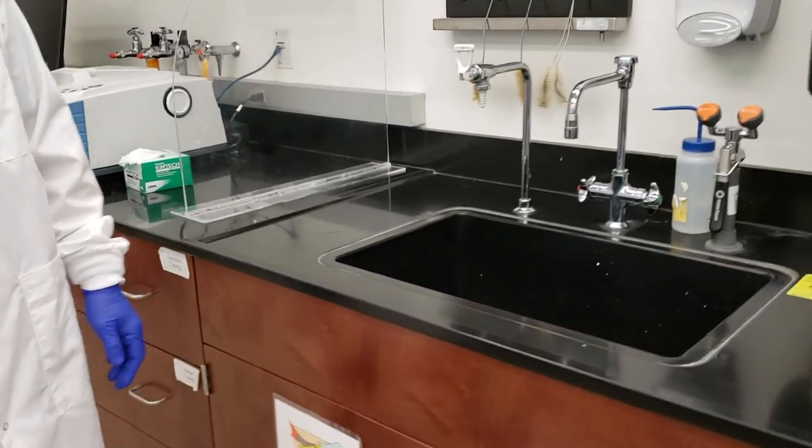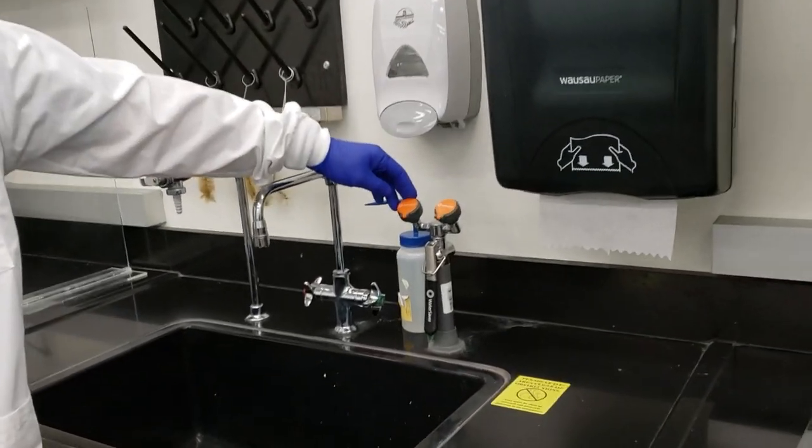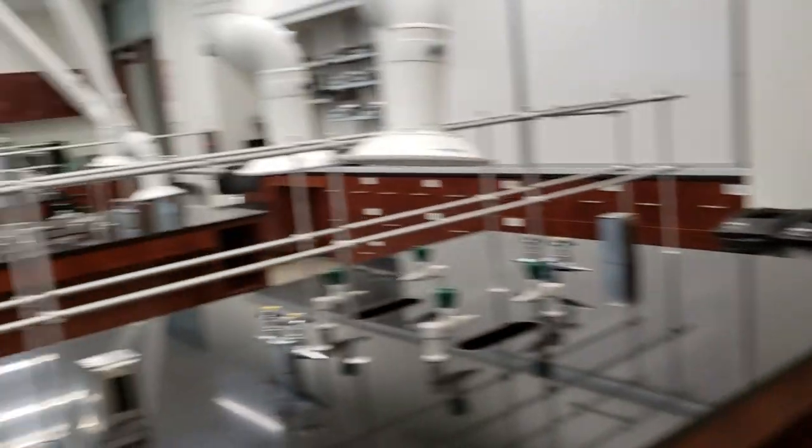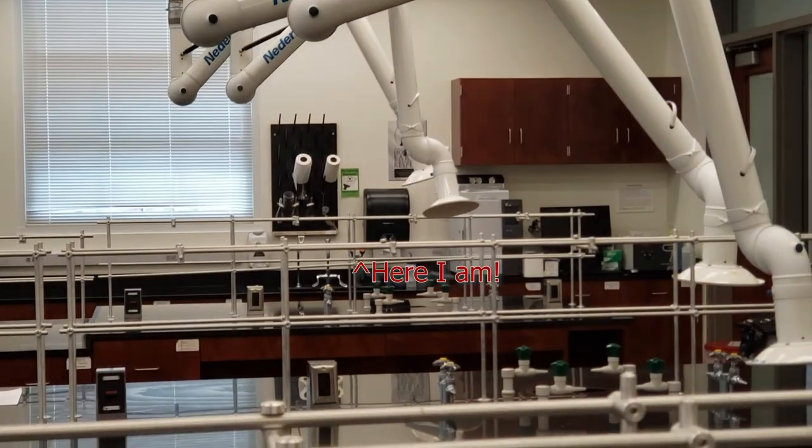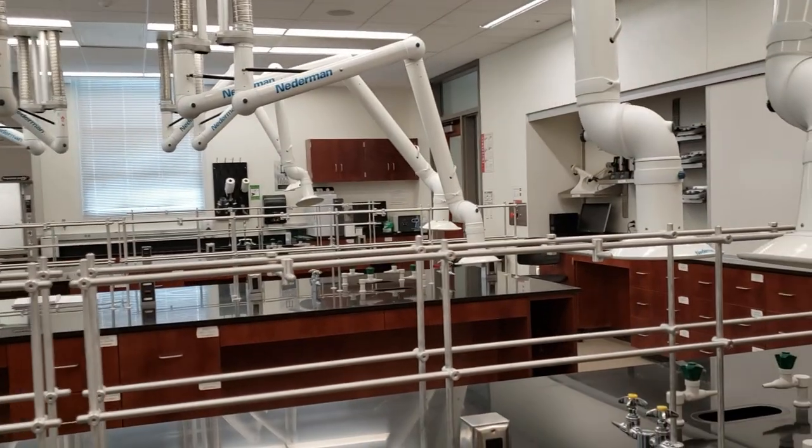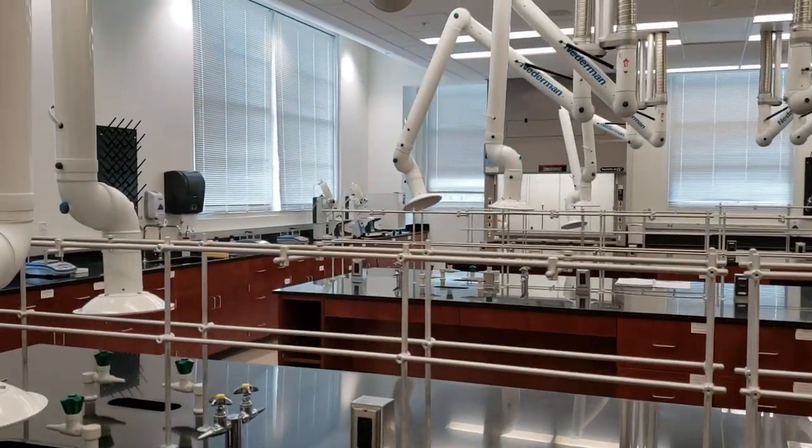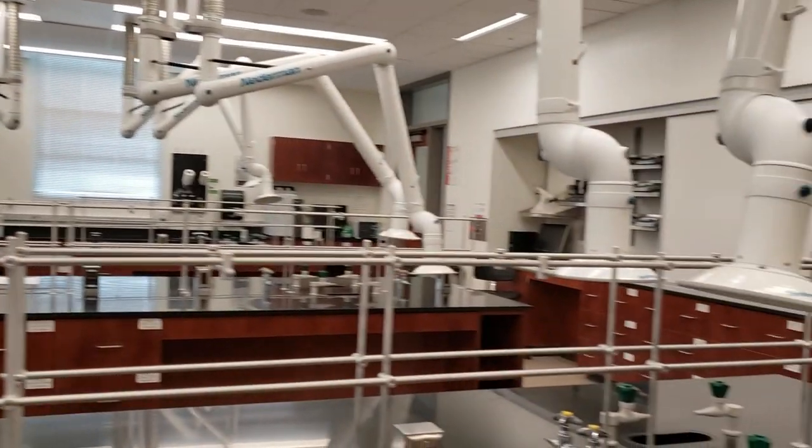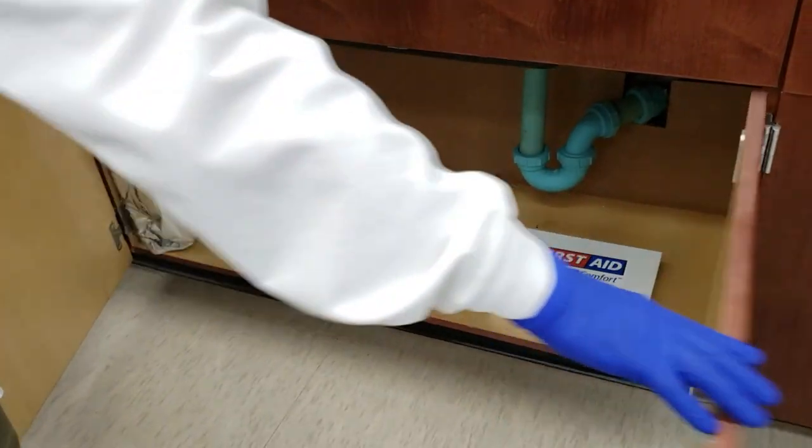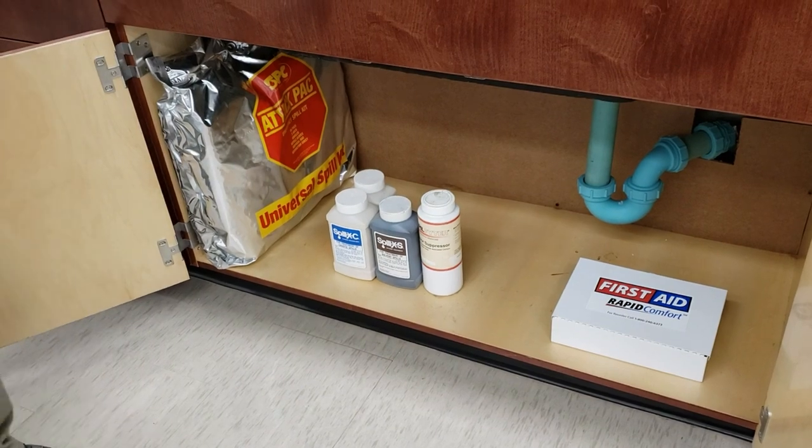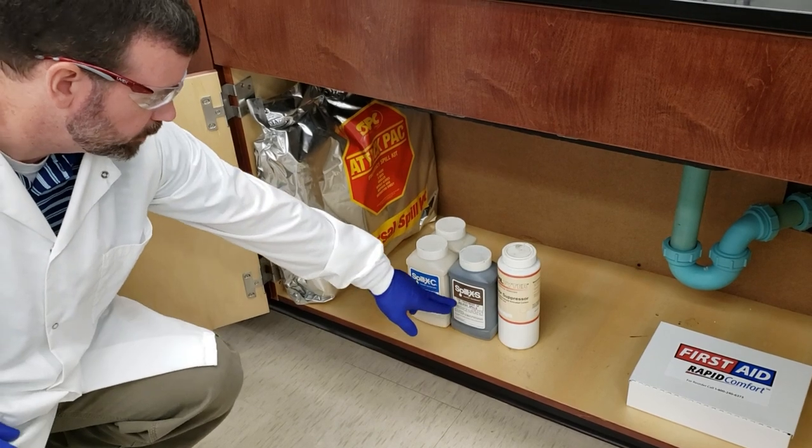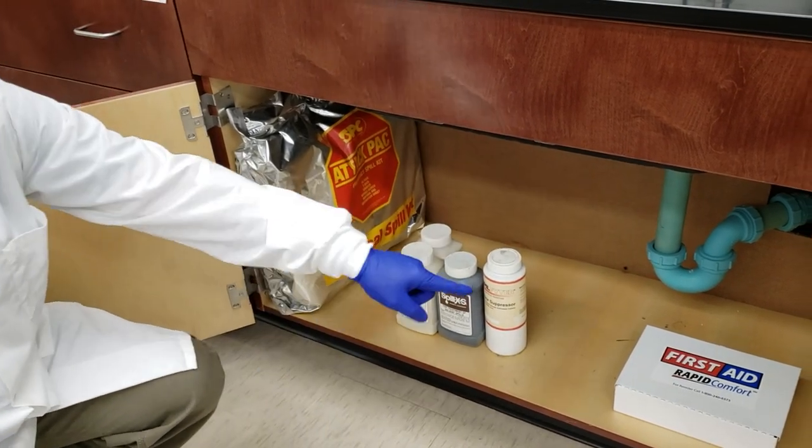First is our eyewash station attached to the sink. We have another eyewash station on the other side with orange caps. Those are the two eyewash stations in each lab. We don't have one on the back sink, so go to the side sinks if something occurs. We have our chemical spill kits and first aid kit underneath our sink, with absorbent barriers for significant spills. We have spill kits for caustic spills, solvent spills, vapor suppression, and our first aid kit.